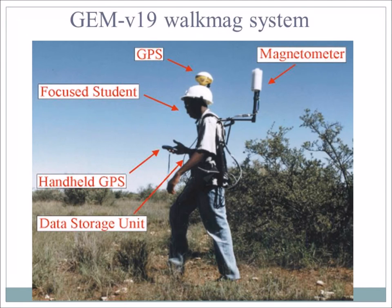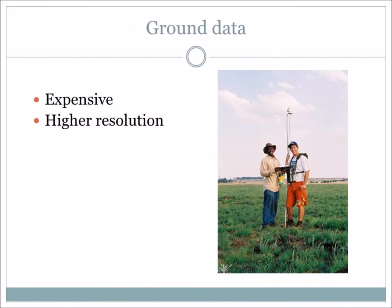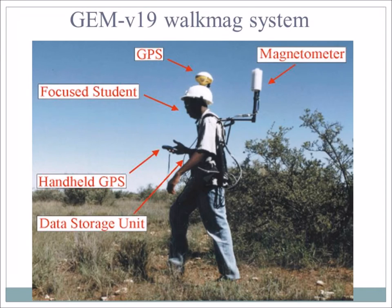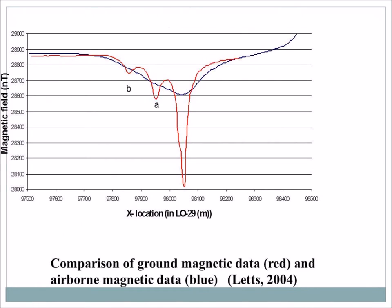This is our new system — a walk-mag. It has a GPS and a magnetometer, and you literally just walk and it records continuously. Previously, you had to walk five meters, put it down, take a measurement, walk five meters, put it down — a lot of admin. You can see the difference here: the blue curve is the airborne magnetic data, and generally you might say there's maybe one dike. But the red curve from the ground magnetic survey picks up three dikes — a lot more detail.